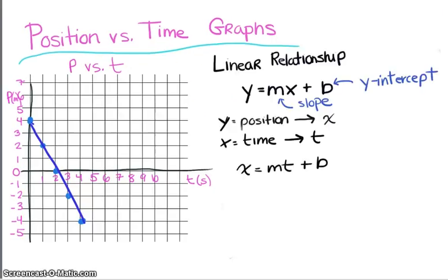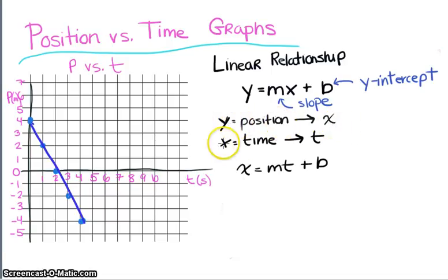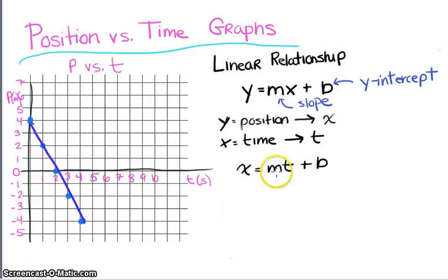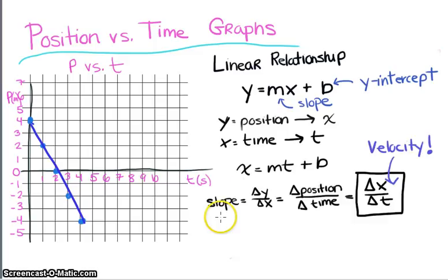So if we have a position versus time graph with a linear relationship, we know that it can be modeled by y = mx + b. Let's define the variables: our Y in this case is position, with symbol X; our X in this case is time, with symbol lowercase t. So we can model it as: position equals slope times time plus the y-intercept B.